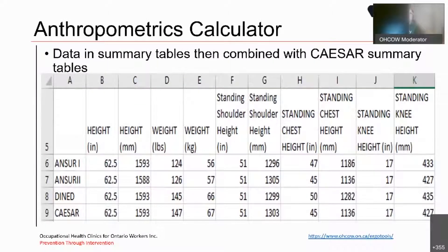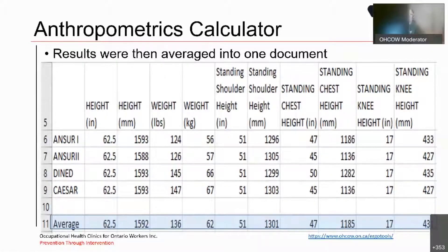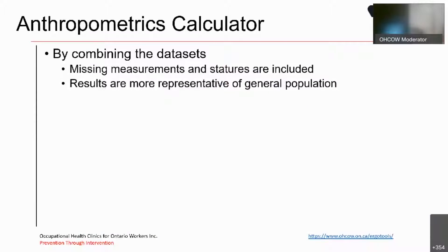And three separate tables were created for the ANSUR-1 and 2, and the DINED. And then we summarized or averaged the results within those to come up with the ANSUR average for 62.5 inches, for example, the ANSUR-2, the DINED, and then we incorporated the summary table information from CESAR. These four measurements were then combined together and averaged. So, we actually had the average measurement across all four databases in order to try to get the most best estimate of what the true heights are and segment lengths for these individuals. So, by combining the data sets, missing measurements and statutes would now be included, so we wouldn't have those gaps, and we felt that the results became more representative of the general population.